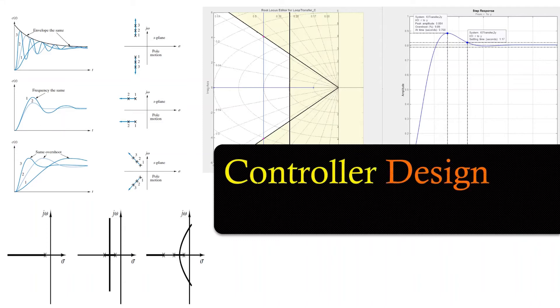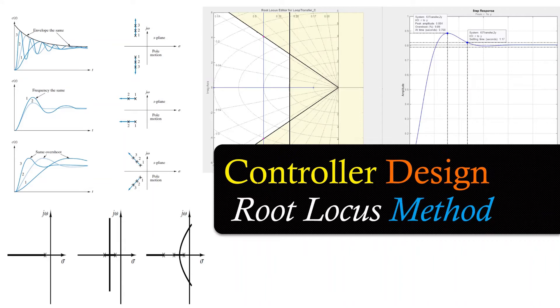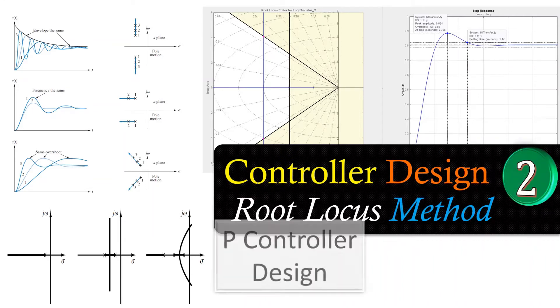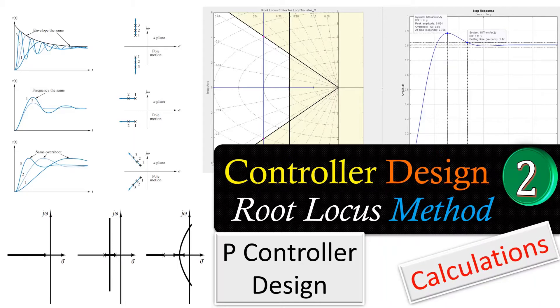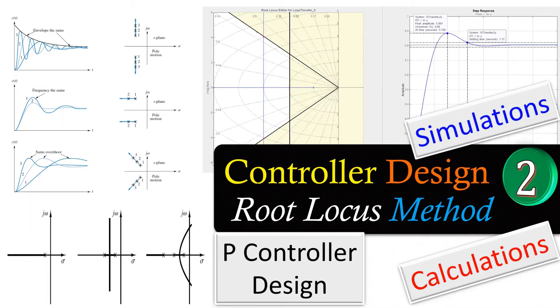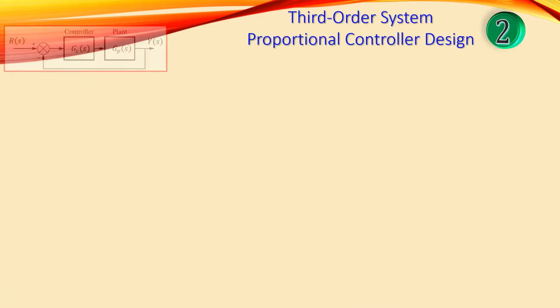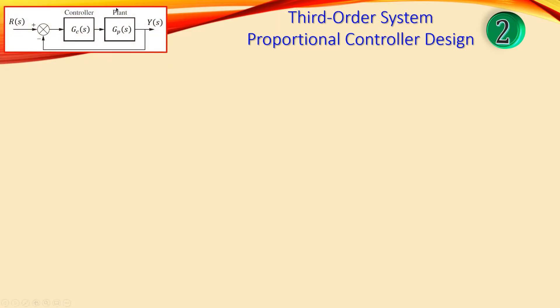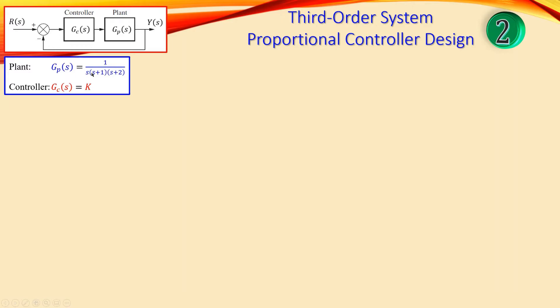Welcome back to a new video about controller design. We continue with the root locus method — this is example number two. We continue with P-controller design, looking at calculations and verifying them using simulations in MATLAB. In this example we'll see a third order system controlled by a P-controller in cascade with a plant in a unity gain feedback configuration. The plant is given by one over s times (s plus one) times (s plus three).